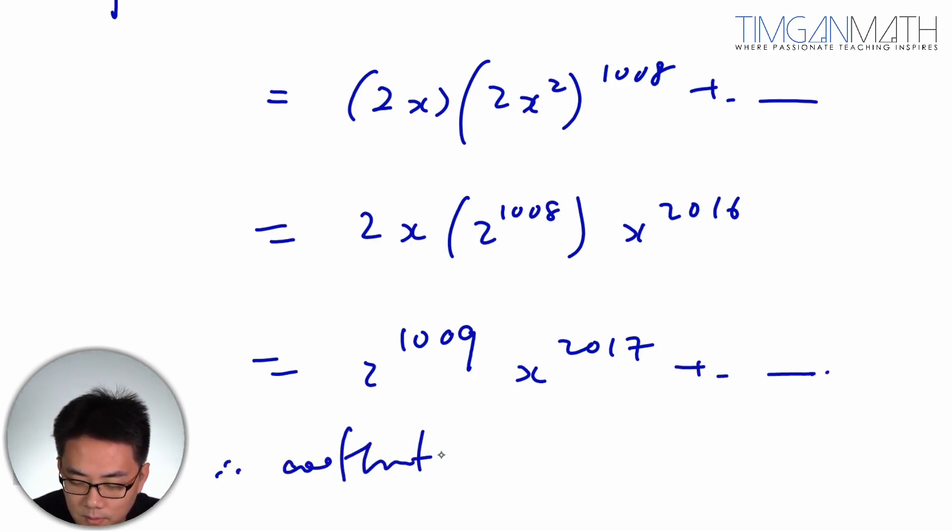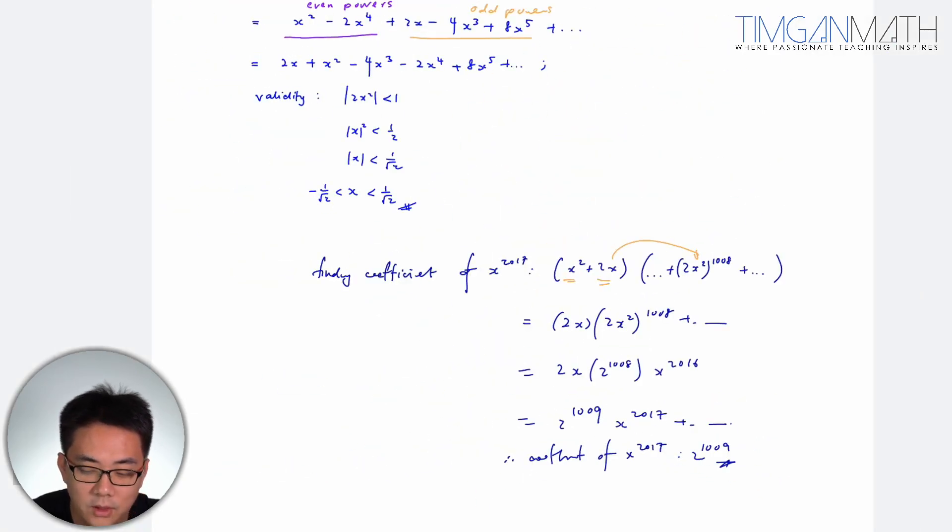So hence, the coefficient of x^2017 would be 2 times 2^1009. That's how we do this question proficiently.